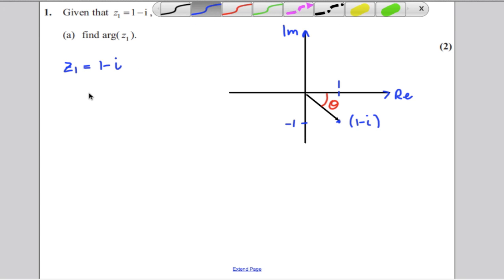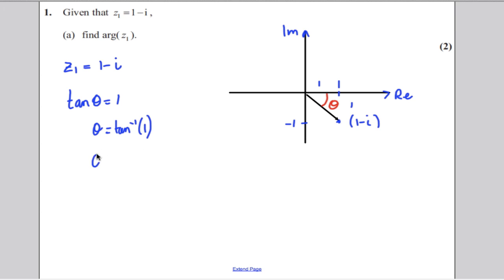We can write down using trigonometry that tan of that angle is the opposite, which is 1, divided by the adjacent, which is 1, so it's 1. Theta is therefore the inverse tan of 1. Keeping your calculator in radians mode, you get theta as pi by 4.